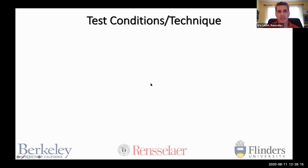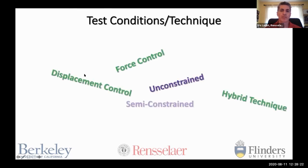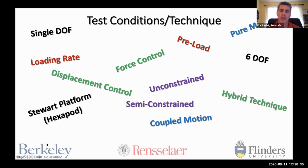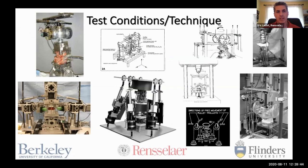Looking at the details of test conditions and testing technique, there are many different parameters: force control, displacement control, or a hybrid technique; testing unconstrained versus semi-constrained; coupled motion versus pure moments; what loading rates are appropriate; single degree of freedom versus six degrees of freedom; and what type of actuator is used. A lot of different systems have been described, with claims of pure moments and unconstrained testing — but if one looks very closely at some systems, it's not always necessarily the case. One reason why this is so hard and why everybody does it so differently is that in vivo moments are generally unknown. In vivo motions are measurable, but reproducing that from a volunteer in a cadaveric specimen can create some disconnect.